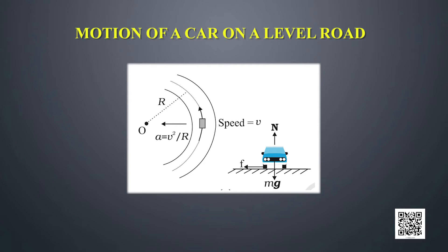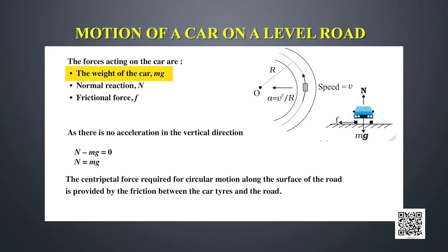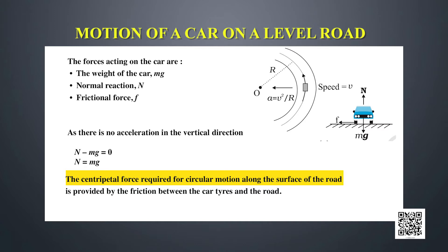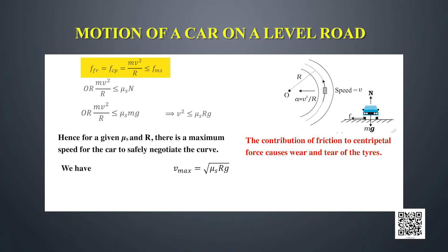As seen from the diagram, the forces acting on the car are: the weight of the car mg vertically downwards, the normal reaction N vertically upwards, and the frictional force f. As there is no acceleration in the vertical direction, N − mg = 0, giving us N = mg. The centripetal force required for circular motion along the road surface is provided by friction: F_friction = F_centripetal = mv² / r.